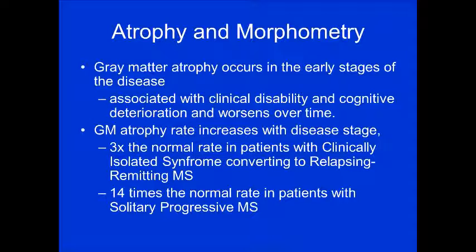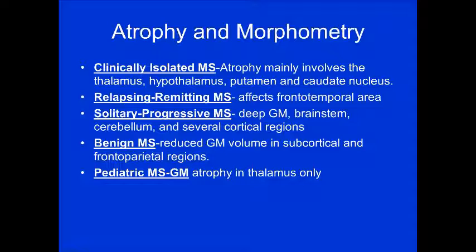Brain volume is important to comment on. In chronic MS, atrophy is seen — gray matter atrophy occurs even in the early stages, associated with clinical disability and cognitive deterioration, worsening over time. The rate of atrophy is three times normal in patients with CIS converting to relapsing-remitting, and up to 14 times normal in patients with solitary progressive MS. Even in benign MS, gray matter volume loss is seen in subcortical and frontoparietal locations, while pediatric MS shows atrophy predominantly in the thalamus.